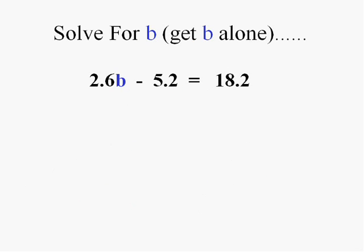Let's try another here. Now we have two troublemakers, 2.6 and negative 5.2. Which one are we going to get rid of first? I'm going to follow the order of operations backwards. 2.6 is multiplying and the 5.2 is subtracting. So the order of operations backwards would have us get rid of the addition and subtraction first.